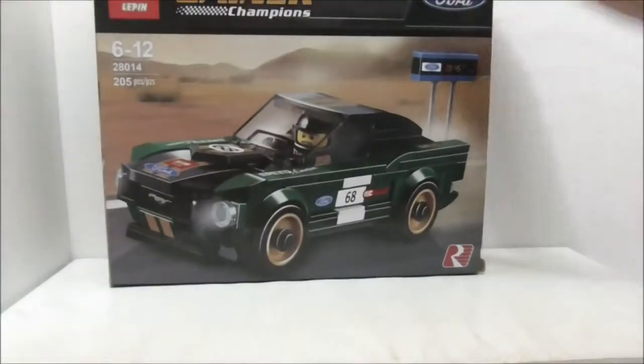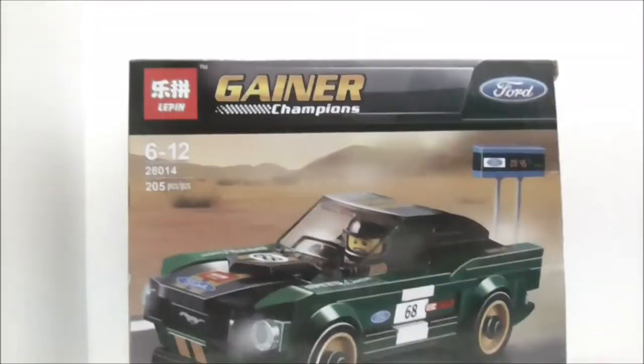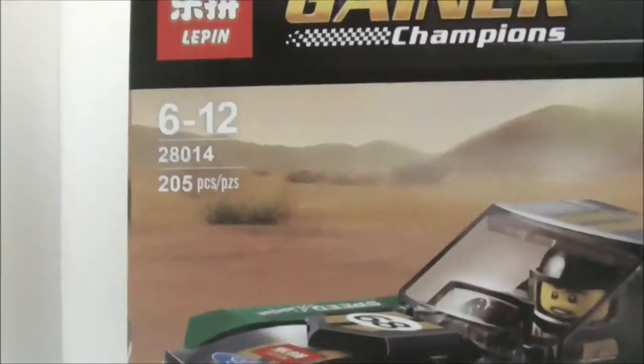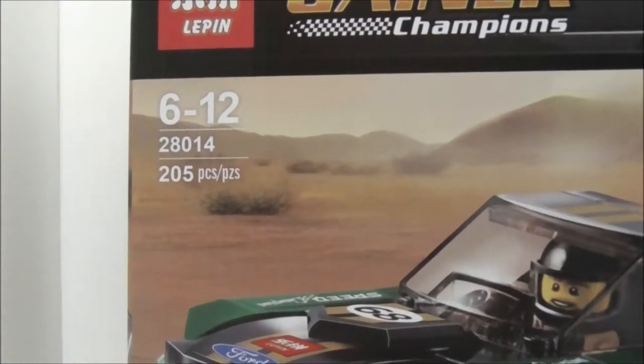Hey guys, here I am still going to review the Lepin Lego-like Speed Champions 1968 Ford Mustang Fastback. This is the box itself right here. As you can see, it's recommended for ages 6 to 12 and this is set 28014. It comes with 205 pieces.